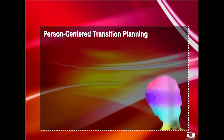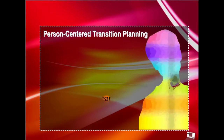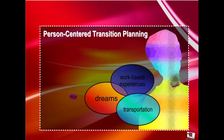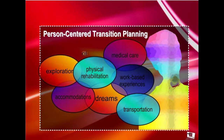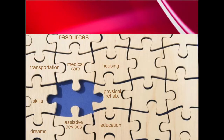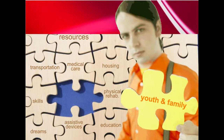Through the collaborative transition process, youth and their families should learn about and be linked to the federal, state, and local services and resources that can address their health and social service needs. These services, like all components of the transition planning, are based on the needs of the individual, rather than dictated by available resources.